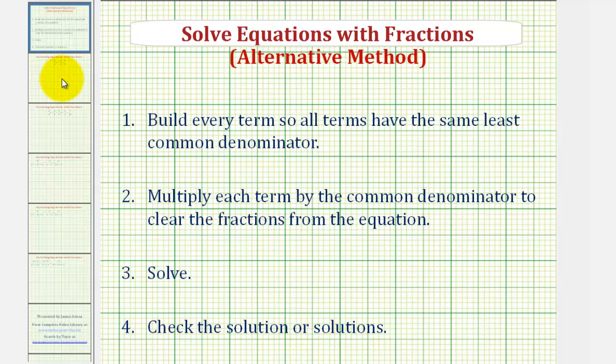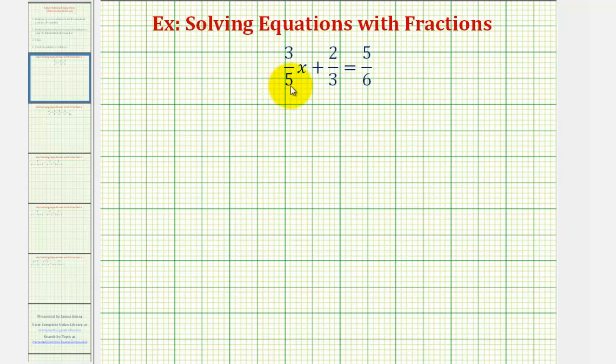So let's take a look at our first example. Notice our denominators are 5, 3, and 6. So the least common denominator is going to be the least common multiple of 5, 3, and 6. So if we recognize this as 30, that's great. We can go ahead and rewrite these fractions with denominators of 30.